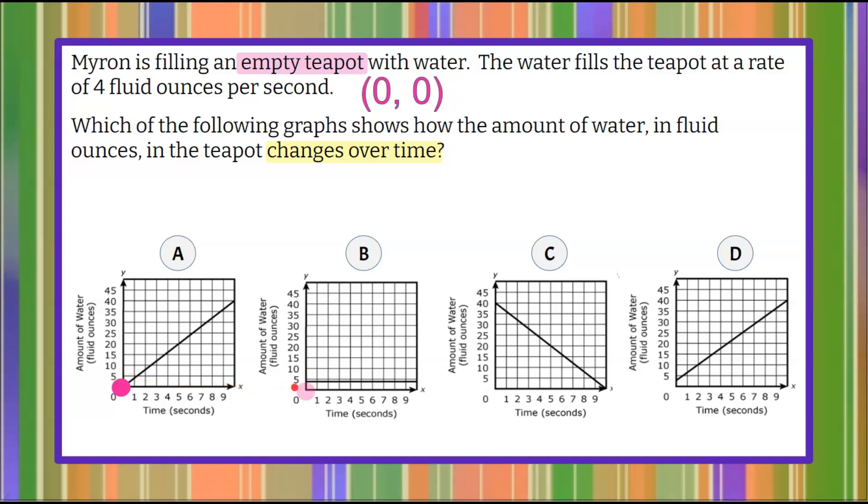When I look at graph B, the line does not begin at the origin. It begins at (0, 5). We're told it's empty. This graph says that at zero seconds there's five fluid ounces, or four, it looks like four fluid ounces in the teapot. So graph B does not represent this situation.